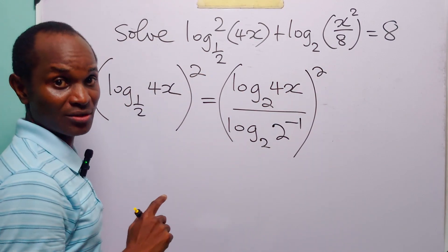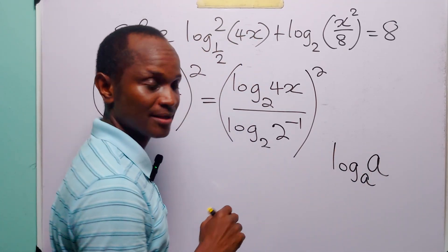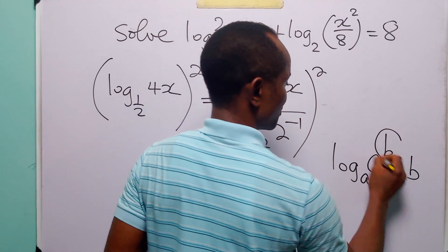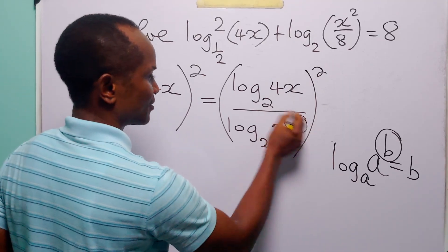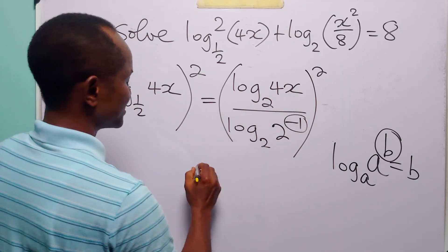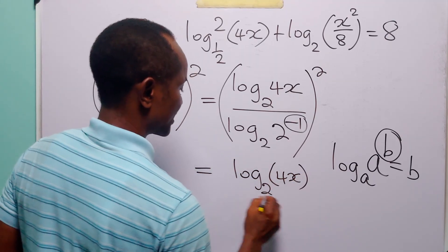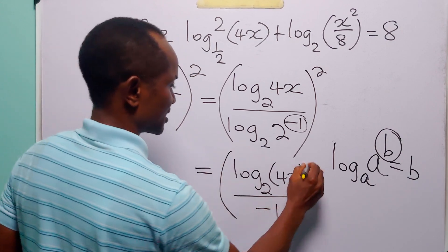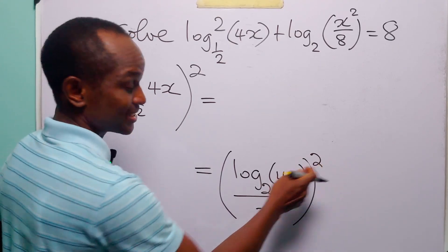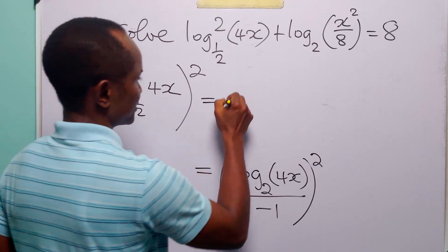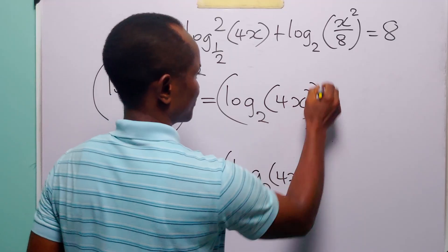Now let us look at this denominator. Remember that log to base a of a to the power b is equal to b. So log to base 2 of 2 to the power minus 1 is equal to minus 1. That simply means this is equal to log to base 2 of 4x divided by minus 1, and everything is still squared. You know that minus 1 squared is equal to 1, so this is the same as log to base 2 of 4x, squared.